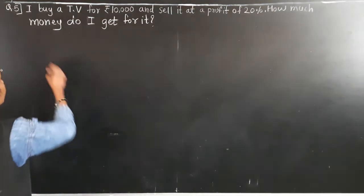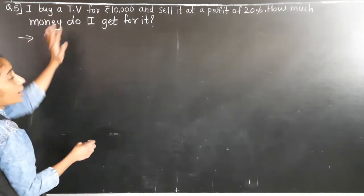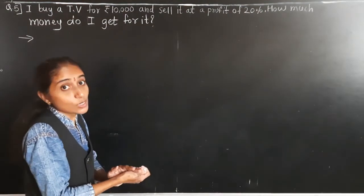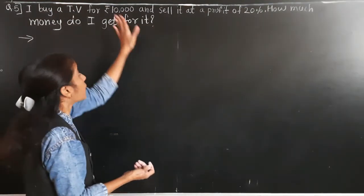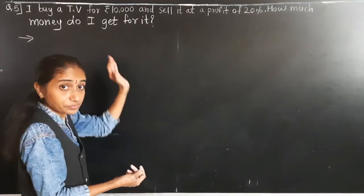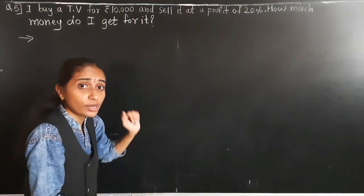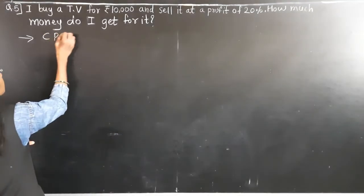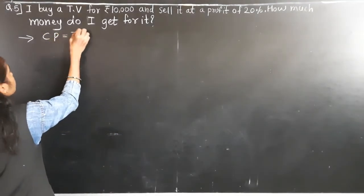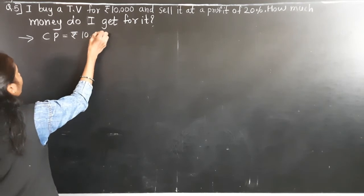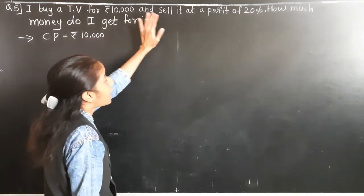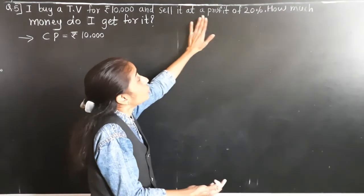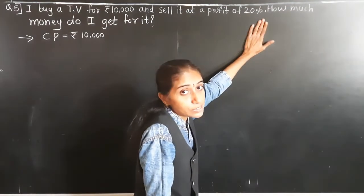Let's write down what is given. I buy a TV and I sell it. So the cost price is rupees 10,000. And it is given that I sell it at a profit of 20%.